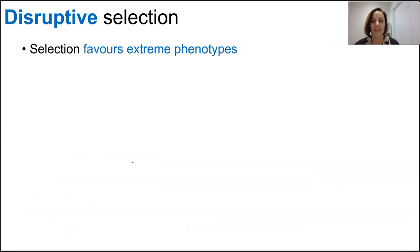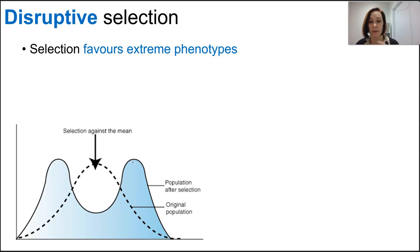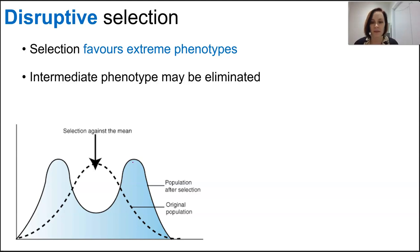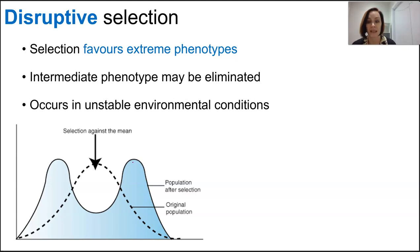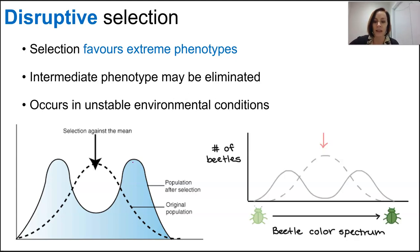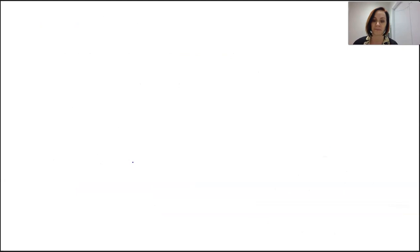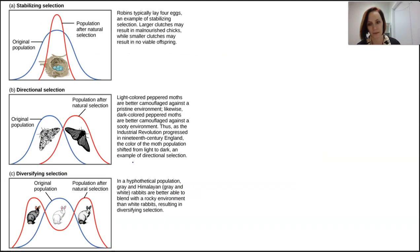Disruptive selection favours the extreme phenotypes — it's the opposite of stabilizing selection. The homozygous dominant and recessive phenotypes may increase in frequency while the co-dominant or incomplete dominant phenotypes in the middle start to disappear. This type of selection occurs when the environment is unstable and conditions are fluctuating frequently. In the Galapagos, the finches are a good example — a drought killed off plants with medium-sized seeds, favouring birds that could eat large or small seeds, eliminating the middle phenotype from the population.